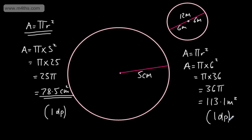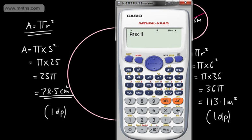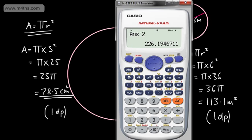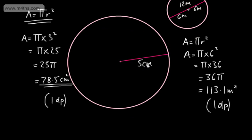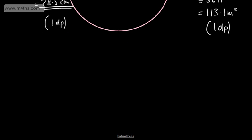A common error is that students square the 12, multiply it by pi, and then half their answer. If we did 12 squared multiplied by pi, we end up with a much larger value — 452. Dividing that by 2 is not the correct area, as we can quite clearly see. So if you have a diameter, make sure you halve it first before squaring.